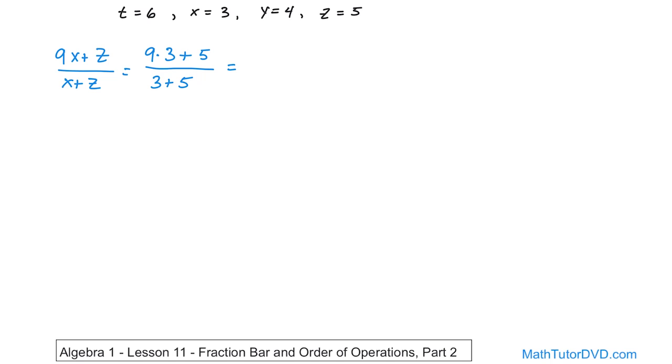So now it just reduces to the same old problems that we've been doing before. This is a unit. We must take care of it separately. Multiplication always happens before addition. So we have 9 times 3 is 27 plus 5 on the top. And on the bottom, all we have is addition. So 3 plus 5 is 8.